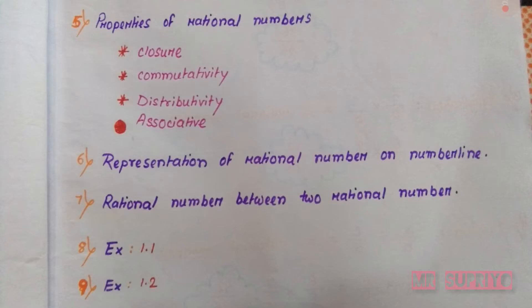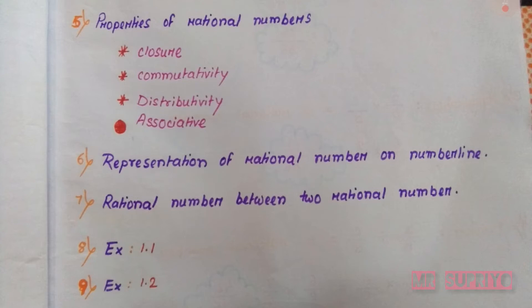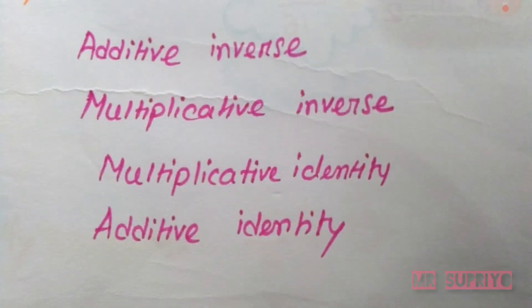Today we will go to the next topic: properties of rational numbers. First is closure, after that commutativity, after that distributivity, and the last one is associativity. Then we will see representation of rational numbers on the number line, and then we will find the rational number between two rational numbers. We will also discuss exercise 1.1 and exercise 1.2. Important terms in this chapter include additive inverse, multiplicative inverse, multiplicative identity, and additive identity.